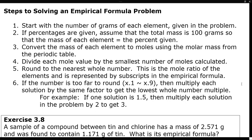Divide each mole value by the smallest number of moles. So out of all the moles you just calculated, which one is the smallest number? Take that one and divide it through everything. That smallest substance will end up getting a subscript of 1, and others may be higher values. Round to the nearest whole number — this is one case where we're not going to fully follow sig figs, because subscripts are whole numbers, not decimals.